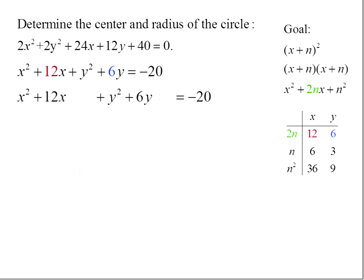We want to add 36 to both sides of the equation to get our perfect square trinomial for x's, and we want to add the 9 to both sides of the equation for the y's.